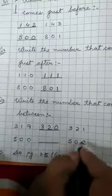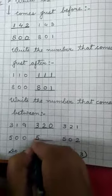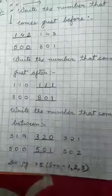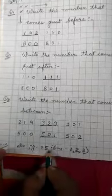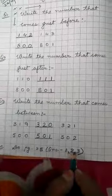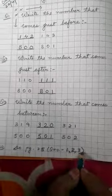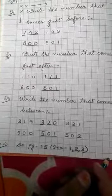Question number 3 is write the number that comes between. Okay, so between 320, 500, 502 you are given, so answer is 501. Now children, your homework is do page 25, question number 1, 2, 3. Okay, see you in my next video. Thank you.